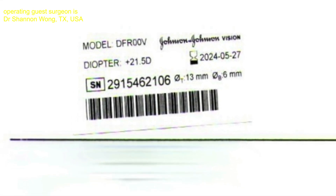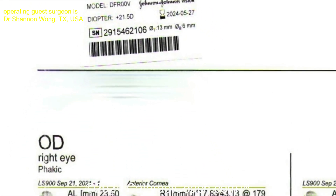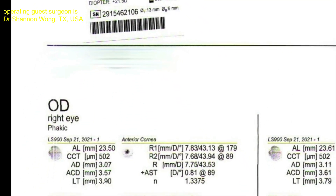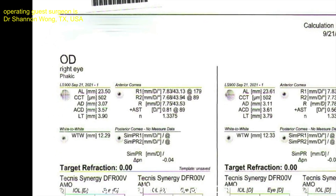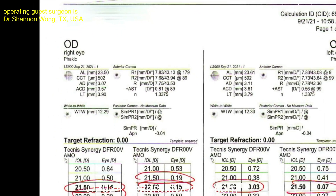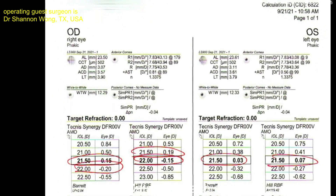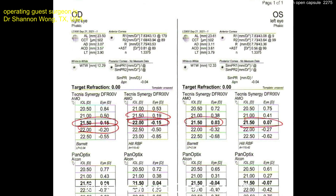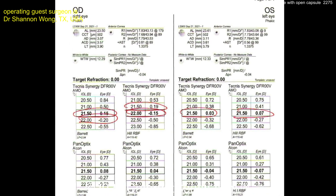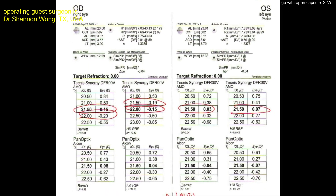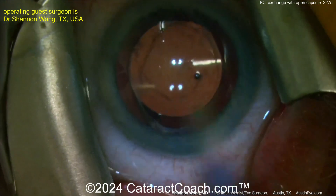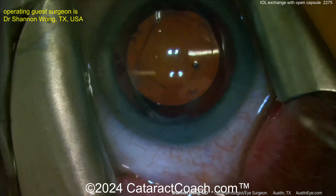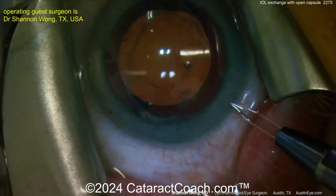When preparing for an IOL exchange with an open capsule, first figure out what the IOL issue is. What was the original power? Was it the trifocal or multifocal nature that wasn't tolerated? What was the issue? Do you need to recalculate? Be accurate in your lens power calculations.